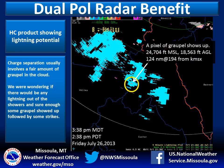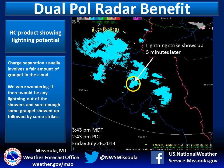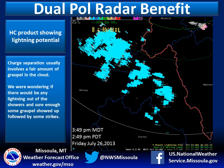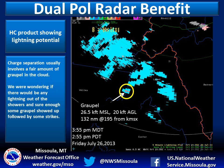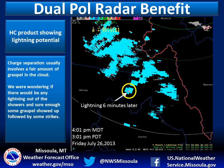Right off the bat, we see a pixel of graupel show up. This could give us a heads up for lightning with this cell. Five minutes later, a lightning strike is detected with the cell that contained the graupel. The 3:49 p.m. image doesn't show any graupel, but with the progression of radar images, we know there is possible graupel and therefore the cells are capable of lightning. The graupel could be above or below this particular radar beam slice. A new cell shows up with some graupel — six minutes later, it produces a lightning strike.